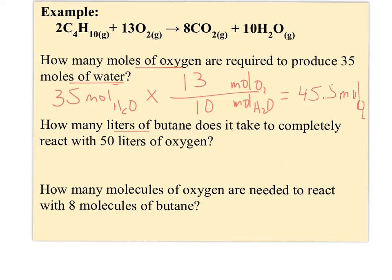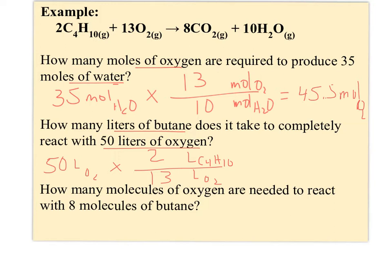The second question asks: how many liters of butane does it take to completely react with 50 liters of oxygen? I write down 50 liters of O2, then set up my conversion factor for liters of butane, C4H10. Looking at the equation, I use 2 liters of butane for every 13 liters of O2. So 50 times 2 divided by 13 gives me 7.69 liters of butane.